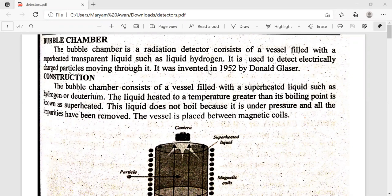What does this mean? We have filled it with superheated transparent liquid like liquid hydrogen. We will detect the radiation and see that the radiation will interact with the hydrogen atoms. It will interact with the bubbles and we will know what radiation is. It is used to detect electrically charged particles moving through it. It was invented in 1952 by Donald Glaser.